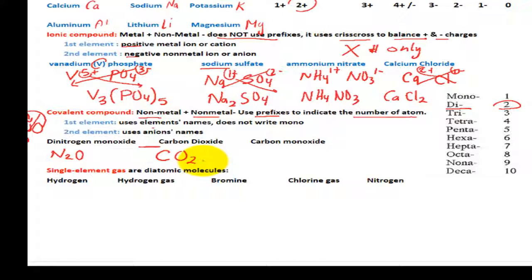And lastly, we have carbon monoxide. No prefix, so we assume it is mono. Therefore, it is C. Monoxide is CO.